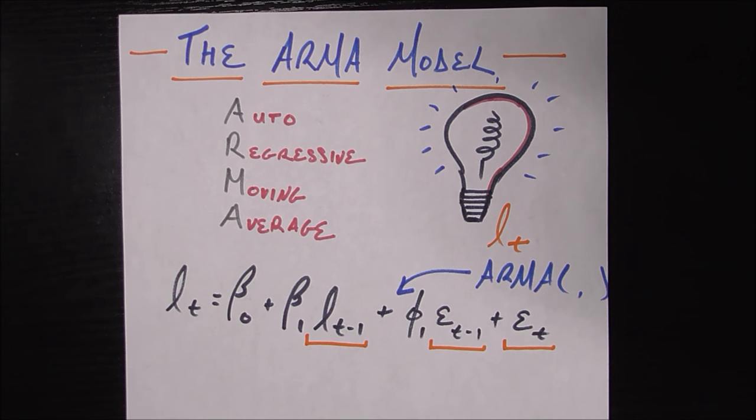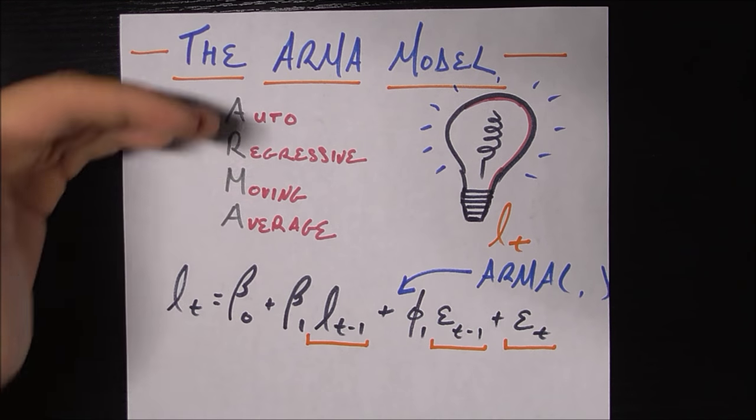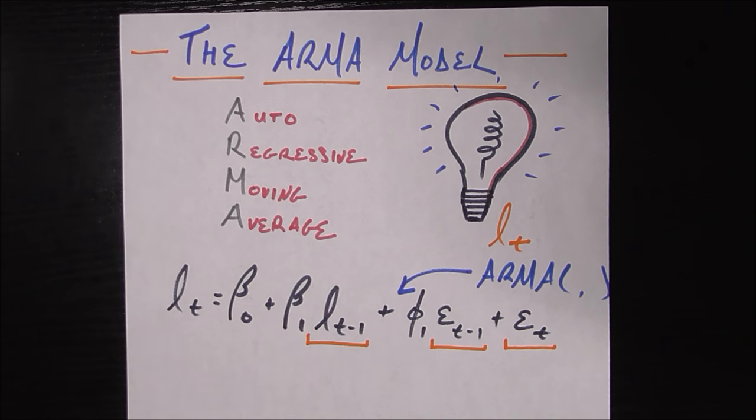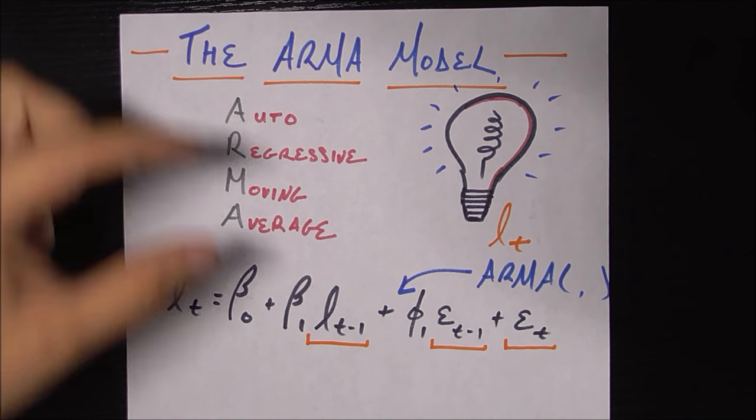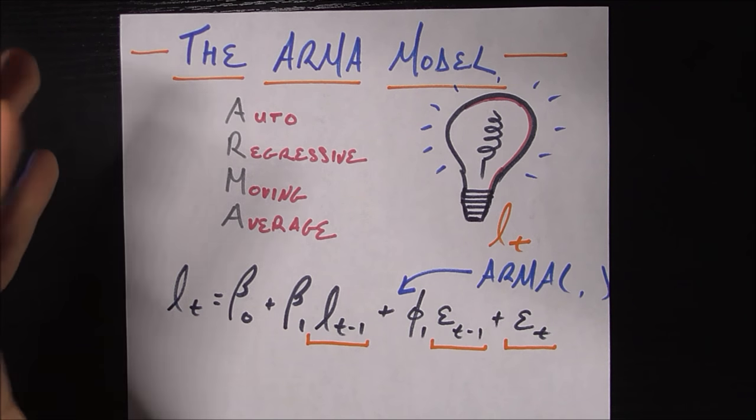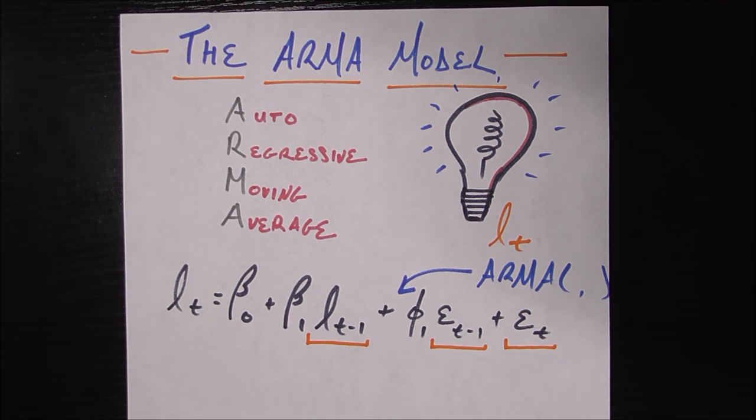In this video we're going to be talking about the ARMA model, which is the autoregressive moving average model. If these words seem familiar from previous time series videos, it's because we've already had a video talking about the autoregressive or AR model and videos talking about the moving average or MA model. In this video we're going to be putting them together into the ARMA model.